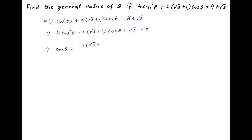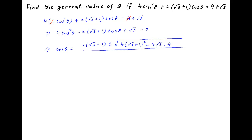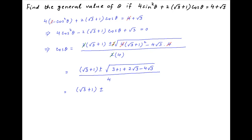Solving this quadratic, we get cos theta equals [2(root 3 plus 1) ± sqrt((2(root 3 + 1))² - 4 × 4 × root 3)] divided by 2 times 4. After some simplification, the numerator becomes (root 3 plus 1) ± sqrt(3 plus 1 plus 2 root 3 minus 4 root 3), divided by 4, which equals (root 3 plus 1) ± sqrt(4 minus 2 root 3), all divided by 4.